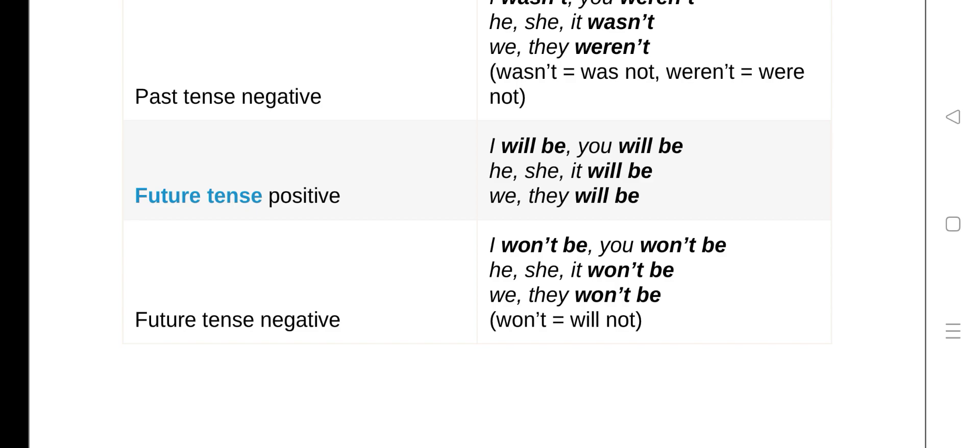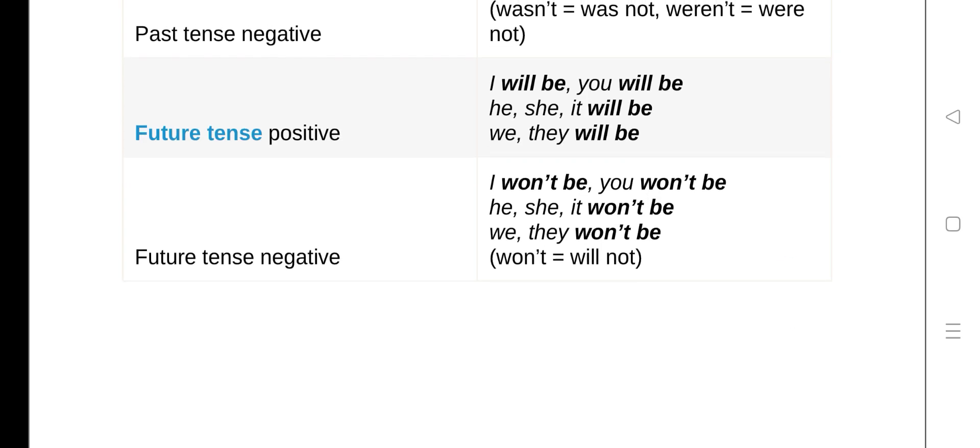Future tense positive: I will be, you will be, he/she/it will be, we/they will be. Let's see the future tense negative: I won't be, you won't be, he/she/it won't be, we/they won't be.